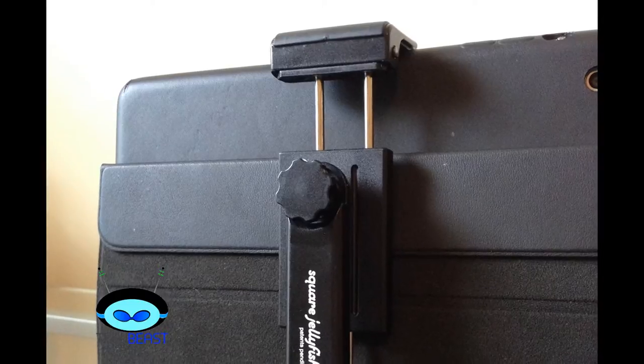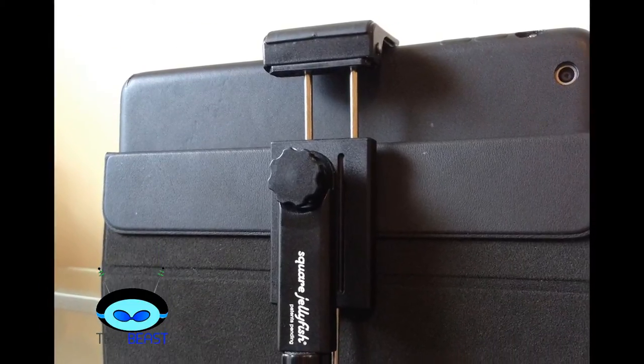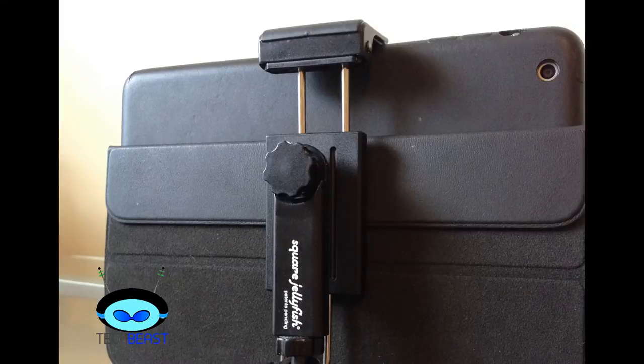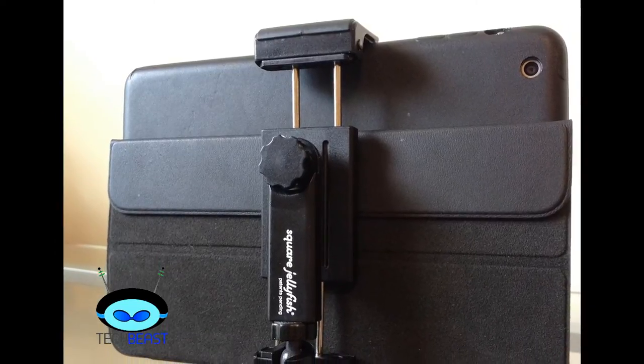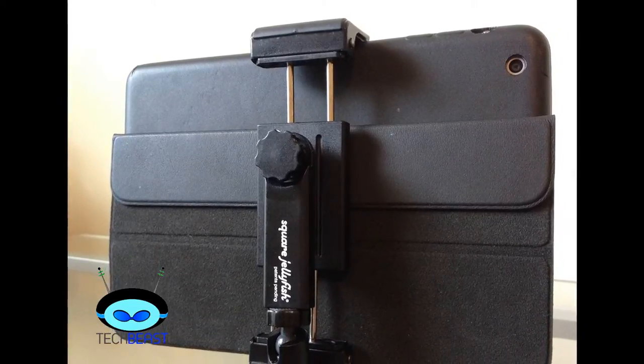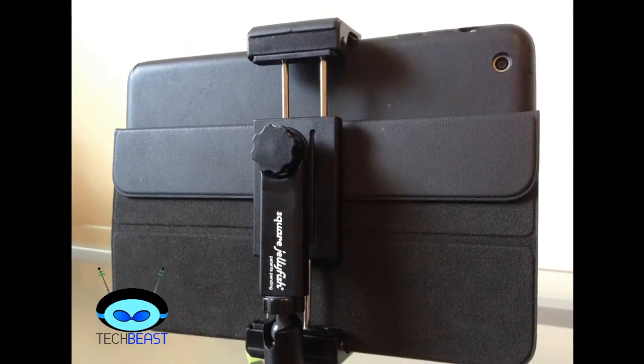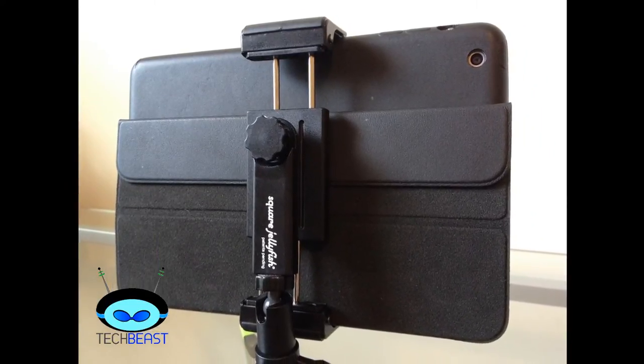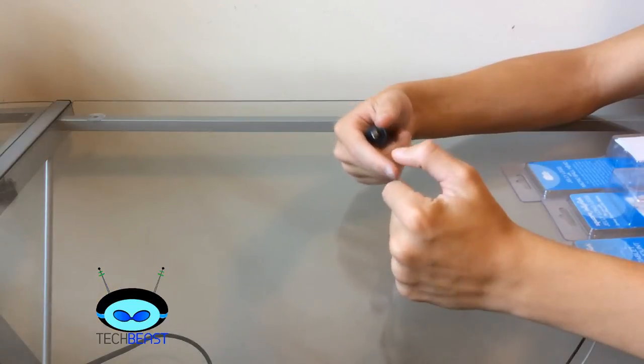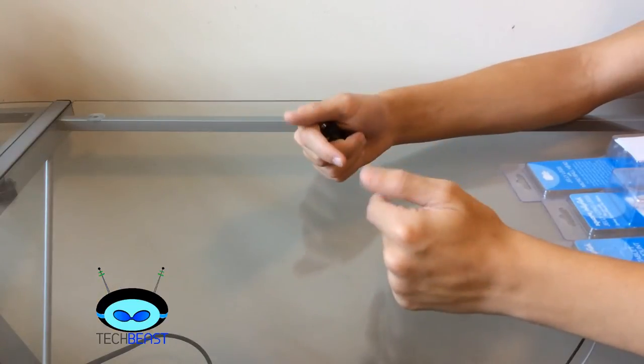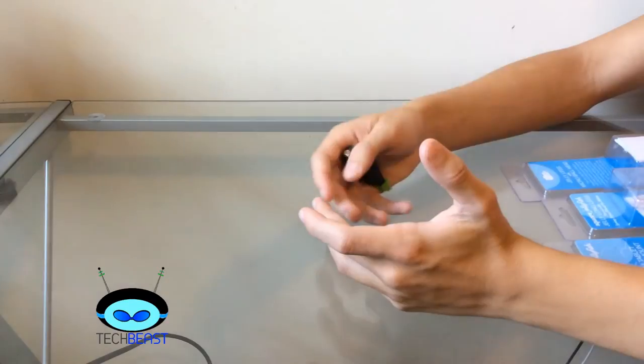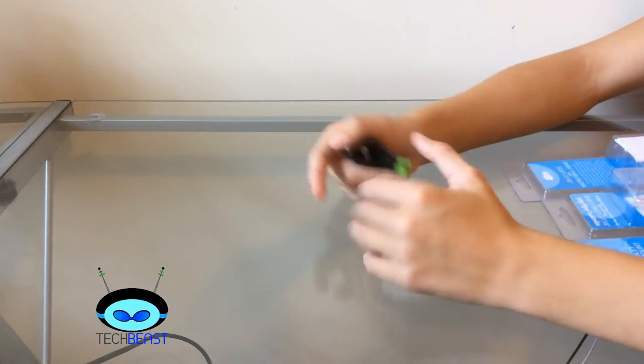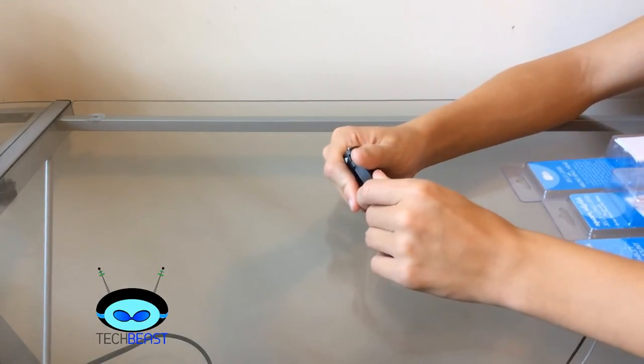Now, one of the cool things about the tablet mount is that you can actually keep your tablet in the case and still put it in the mount, as you'll see in the picture that's probably up right now. I have my iPad mini retina in the smart case, and I just fold down the back flap so it doesn't get in the way of the camera, and I'm filming it just fine.